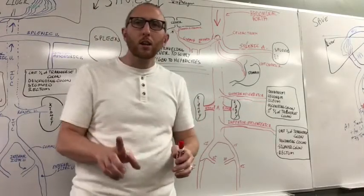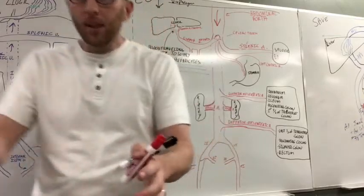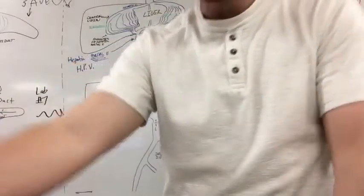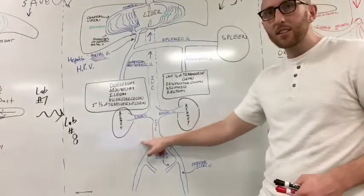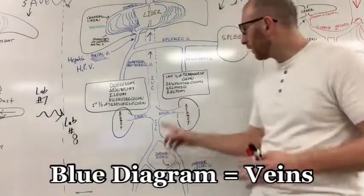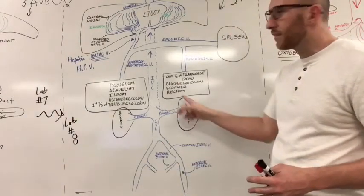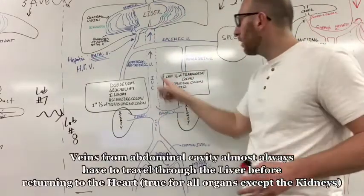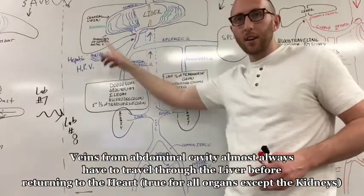Or you could think about this other one over here, the veins which would take the deoxygenated blood from these organs and take it back to the heart. But with the veins, oftentimes you have to travel through the liver.